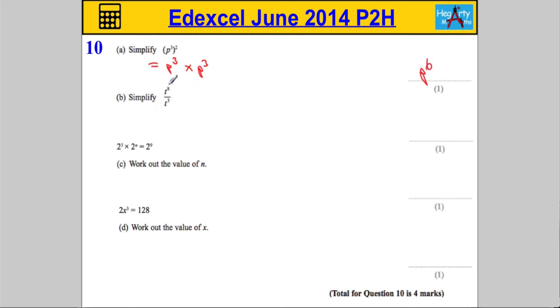Over here, t to the 8 over t to the 3. We've got two terms divided by each other with the same base, so we can subtract the powers. So we're going to get t to the power of 8 subtract 3 is 5.